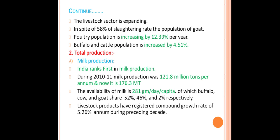The livestock sector is expanding in spite of a 58 percent slaughtering rate. The population of goat, even with a 58 percent slaughtering rate, provides income to the nation. Poultry population is increasing by 12.39 percent per year, and cattle population increased by 4.51 percent in total production.